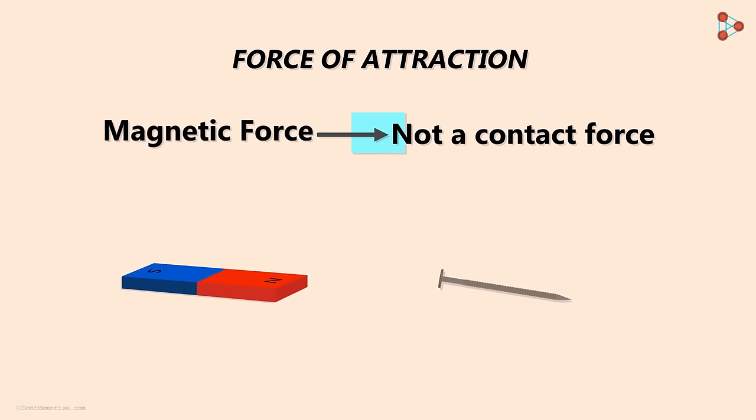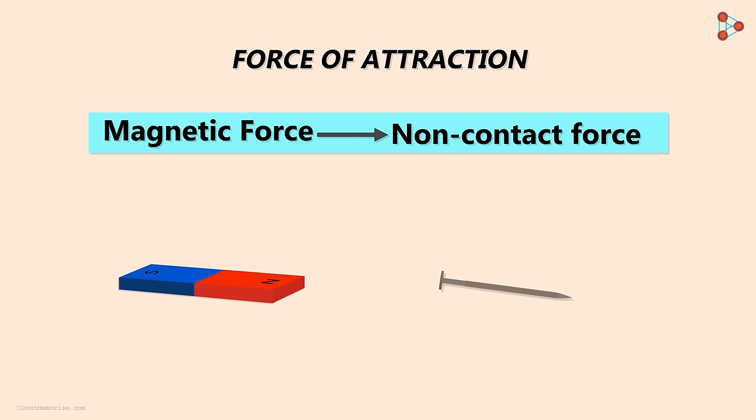It again proves that a magnetic force is not a contact force. So we can say that it's a non-contact force. The force exists even though the magnet is not in contact with the iron.